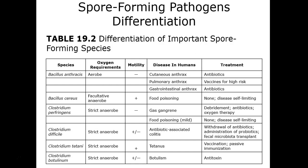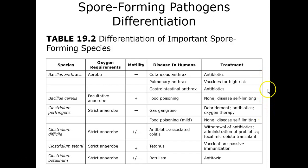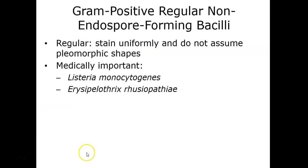As a study recommendation, set up a table with species name, disease, treatment, and key virulence factors — whether it's a toxin or a capsule. These are key elements that will help you prepare for exams.